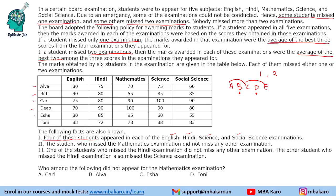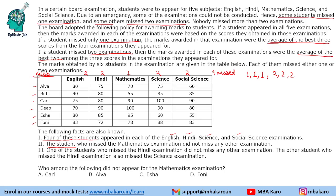There are six students A, B, C, D, E, F. Four are appearing in English, Hindi, Science, and Social Science — meaning two people missed English, two missed Hindi, two missed Science, and two missed Social Science. One student missed the Mathematics examination and did not miss any other examination. If you count, there are a total of nine exams missed. Since a person can miss one or two, three people missed one examination and three people missed two examinations. In fact, one of the questions asked how many people missed exactly one examination — that could be derived without fully solving the set.